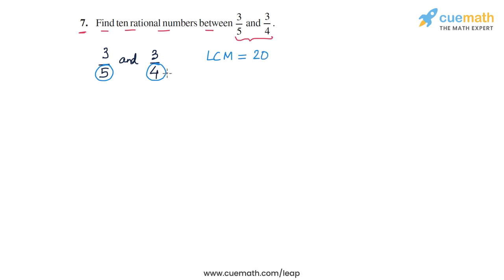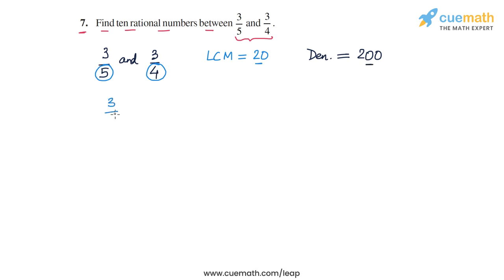Let's pick a multiple of the LCM that is sufficiently large — let's take the denominator to be 20 times 10, or 200. We will write both 3/5 and 3/4 as equivalent rational numbers with the denominator 200.